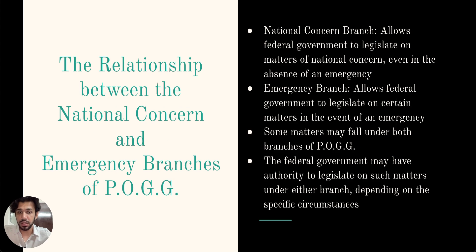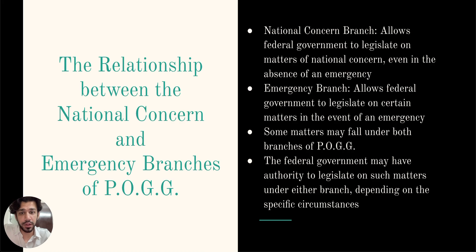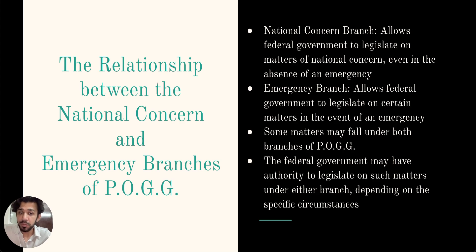The relationship between the national concern and the emergency branch of the POG power is a complex one. The national concern branch allows the federal government to legislate on matters that have acquired national dimensions or concerns even in the absence of an emergency, providing Parliament with permanent jurisdiction over distinct subject matters that do not fall within the enumerated heads of Section 92 of the Constitution Act. For example, aeronautics and the national capital region are subjects that may fall under this branch. On the other hand, the emergency branch allows the federal government to legislate on certain matters in the event of an emergency, regardless of whether the matter has acquired national dimensions, providing temporary jurisdiction over all subject matters including general ones like inflation.